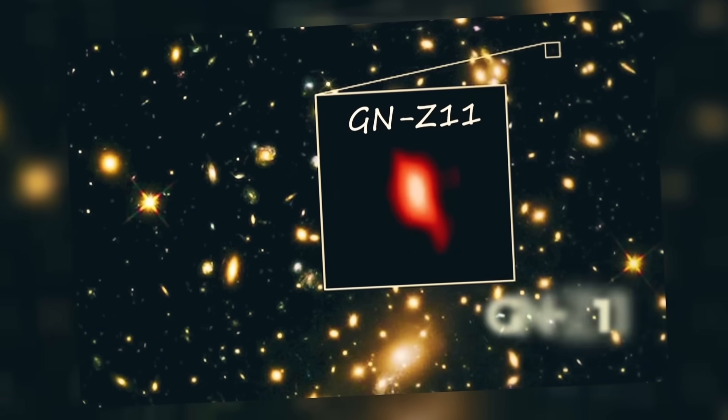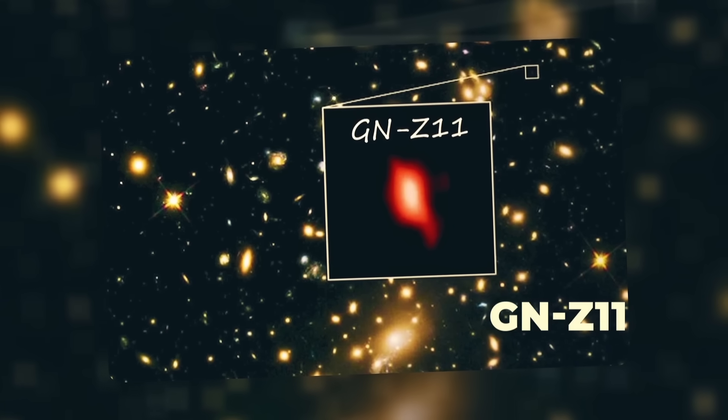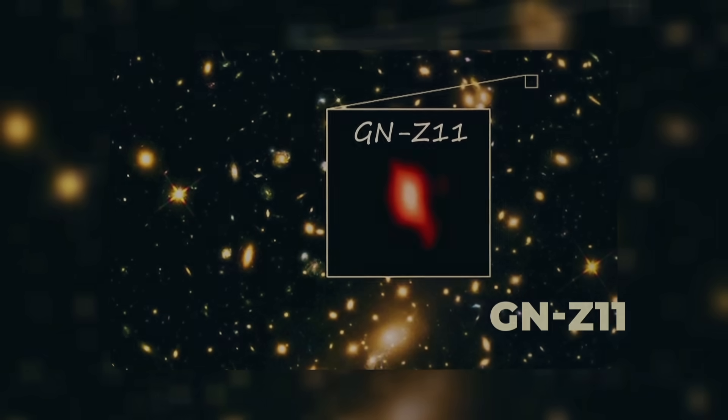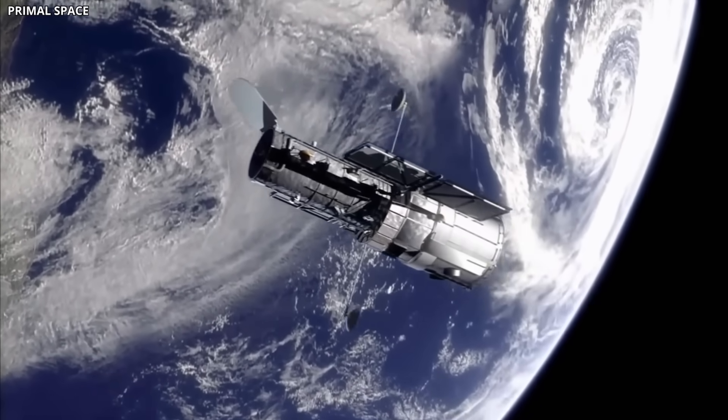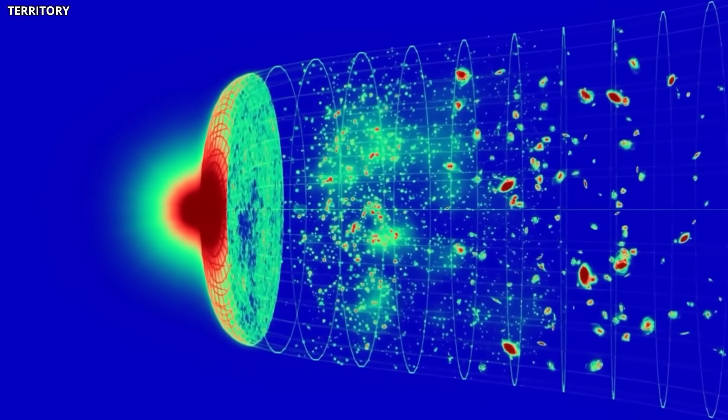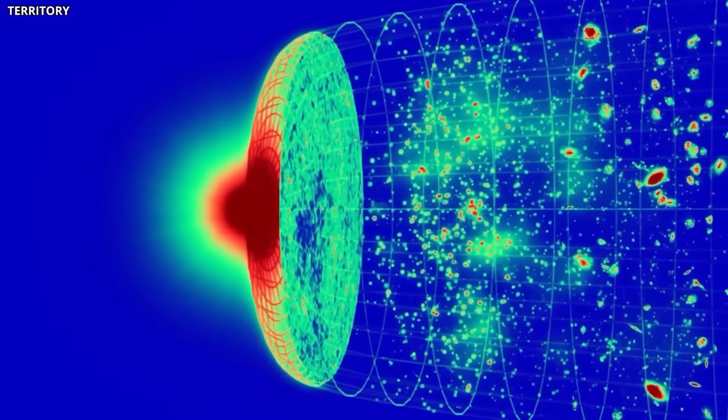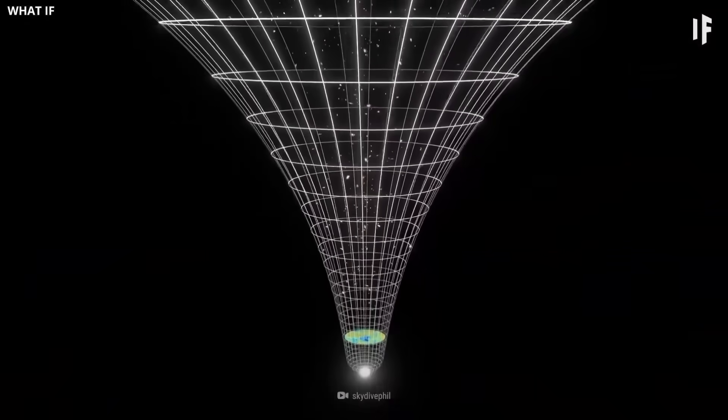Still, many scientists thought GNZ 11 might just be a rare exception or a cosmic fluke. That's because most other galaxies observed by Hubble at similar distances, up to redshift of 10, fit perfectly with predictions from our cosmological models. So, there wasn't much pressure to rethink our theories.